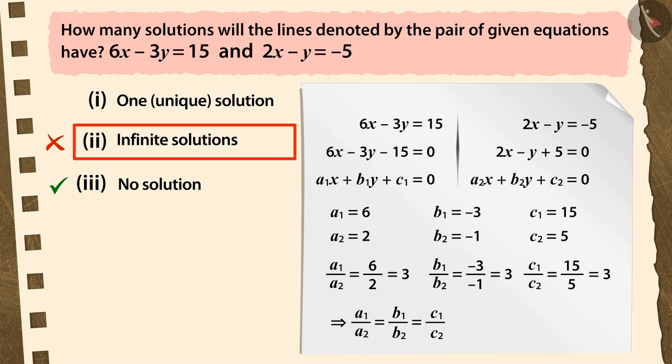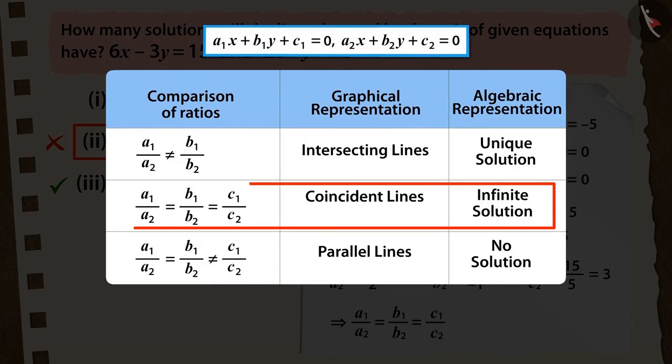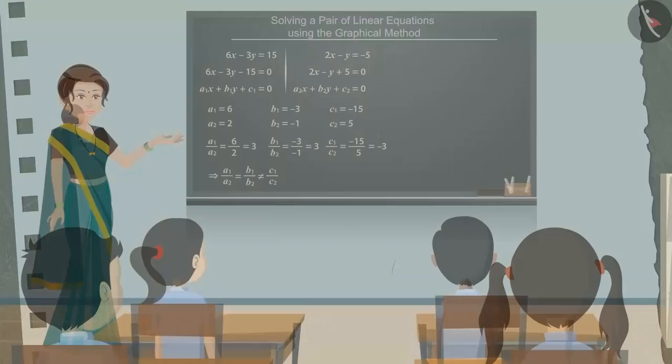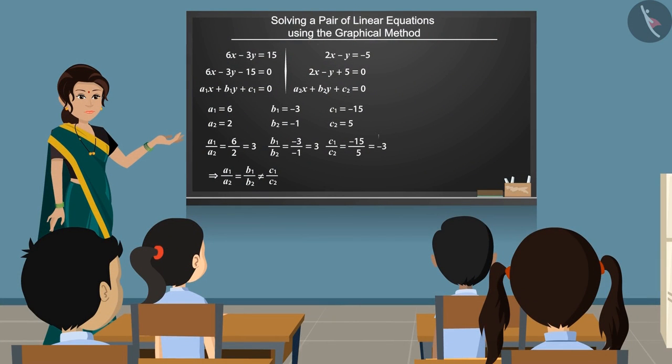we forgot to prefix the constant term of the first equation with a negative sign. And as a result, the ratio of coefficients and the ratio of constants turned out to be equal.